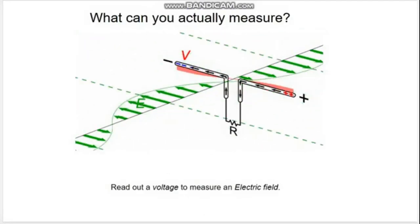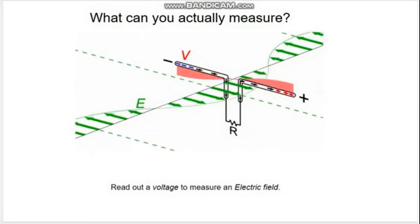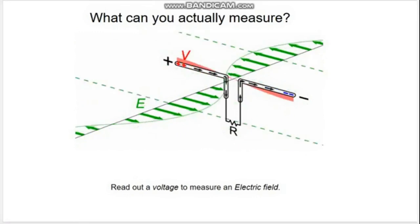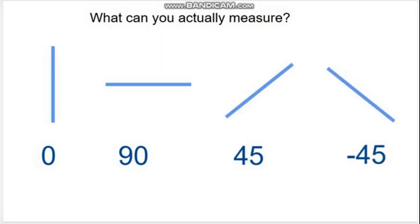What can you actually measure? When you're actually measuring something with, for example, a dipole antenna, you're reading out a voltage to measure an electric field. Let's say you take your dipole, you just orient it at the sky. Let's call this zero degrees. Then you can take it and turn it perpendicular, and you say this is reading out 90 degrees. Likewise, you can measure the positive 45 and the negative 45.